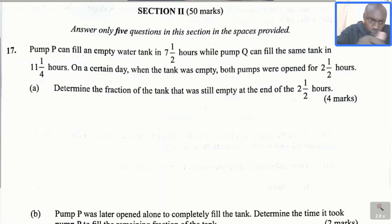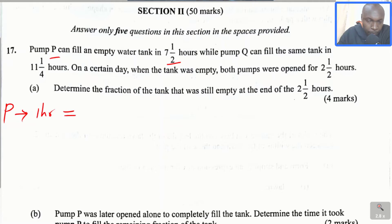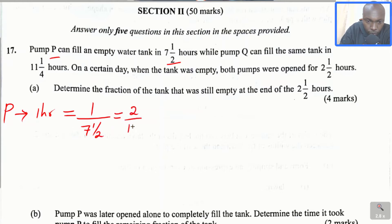We begin by getting the fraction filled by pump P in 1 hour, since we know that P can fill the tank in 7 and a half hours. So pump P in 1 hour: the fraction of the tank that is going to be filled — we just take 1 divided by 7 and a half, and when you divide it, you get 2 divided by 15 of the tank. So that represents the fraction of the tank filled by pump P in 1 hour.